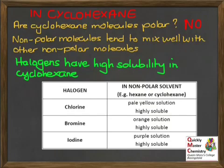Again, they give coloured solutions. Looking at the table, chlorine makes a pale yellow solution, bromine in cyclohexane makes a decidedly orange solution, and iodine — a complete change from the aqueous solution — makes a purple solution in cyclohexane.